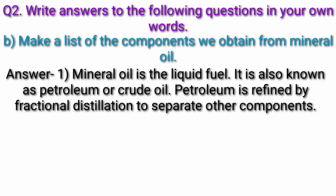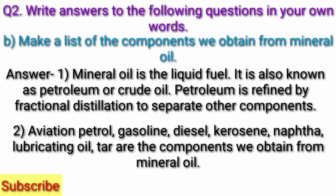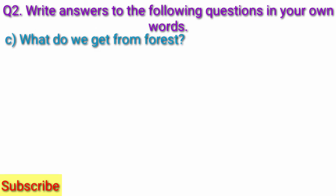Question b) Make a list of the components we obtain from mineral oil. Answer: Mineral oil is the liquid fuel also known as petroleum or crude oil. Petroleum is refined by fractional distillation to separate its components. Aviation petrol, gasoline, diesel, kerosene, naphtha, lubricating oil, and tar are the components we obtain from mineral oil.